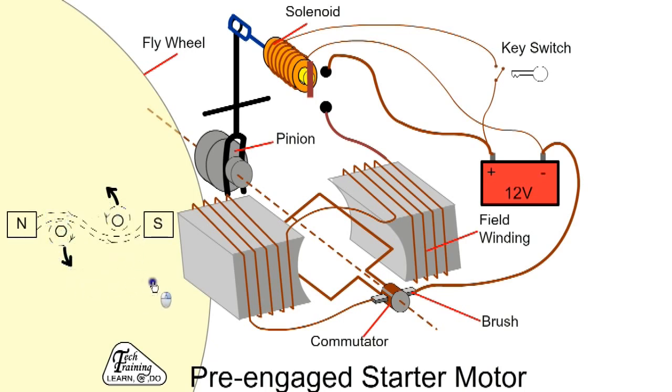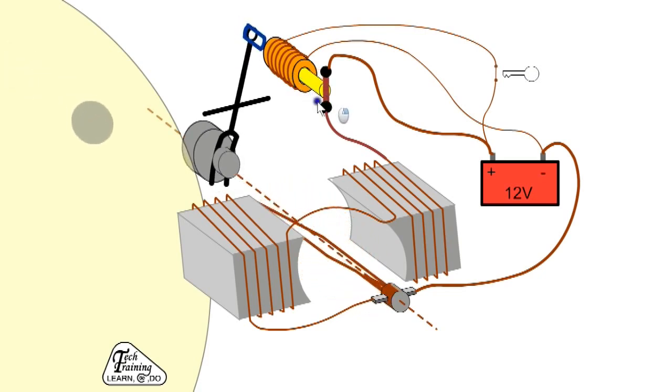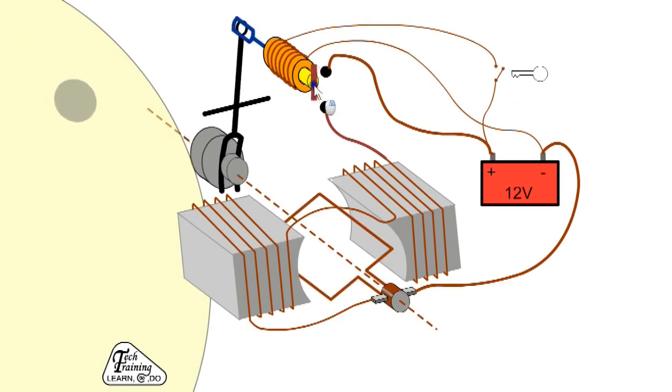When the key is turned, the solenoid or relay is energized. The plunger moves forward and engages the pinion with the flywheel. At the end of its travel, it closes the main contacts for the starter. High current passes through the heavy cables and the motor rotates and cranks the engine. When the key is released, the solenoid moves back, stops the motor and disengages the pinion. Note, the flywheel remains rotating.